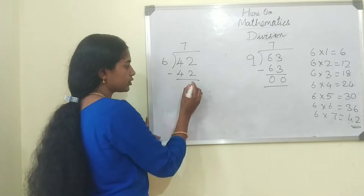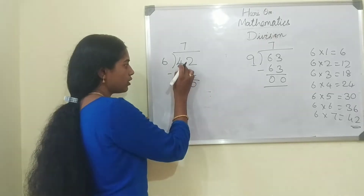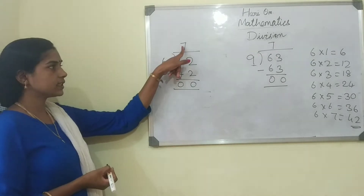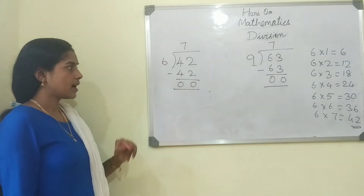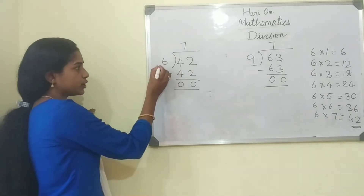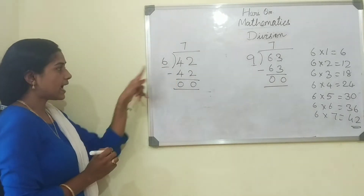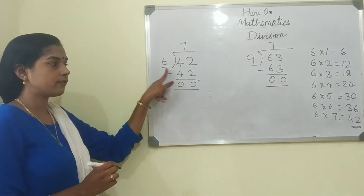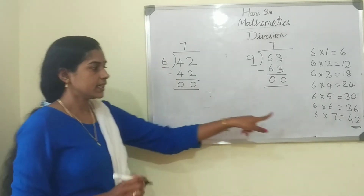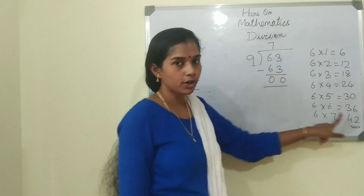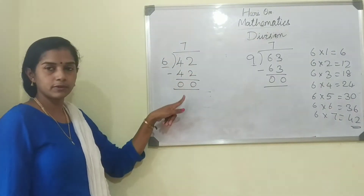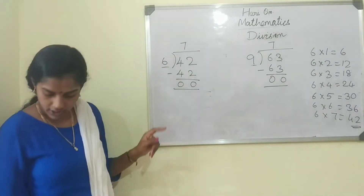42 minus 42: 2 minus 2 is 0, 4 minus 4 is 0. So what is the answer? 7 is the answer. 42 divided by 6 — 6 how much are 42? It is 6 sevens are 42, and 42 minus 42 is 0.